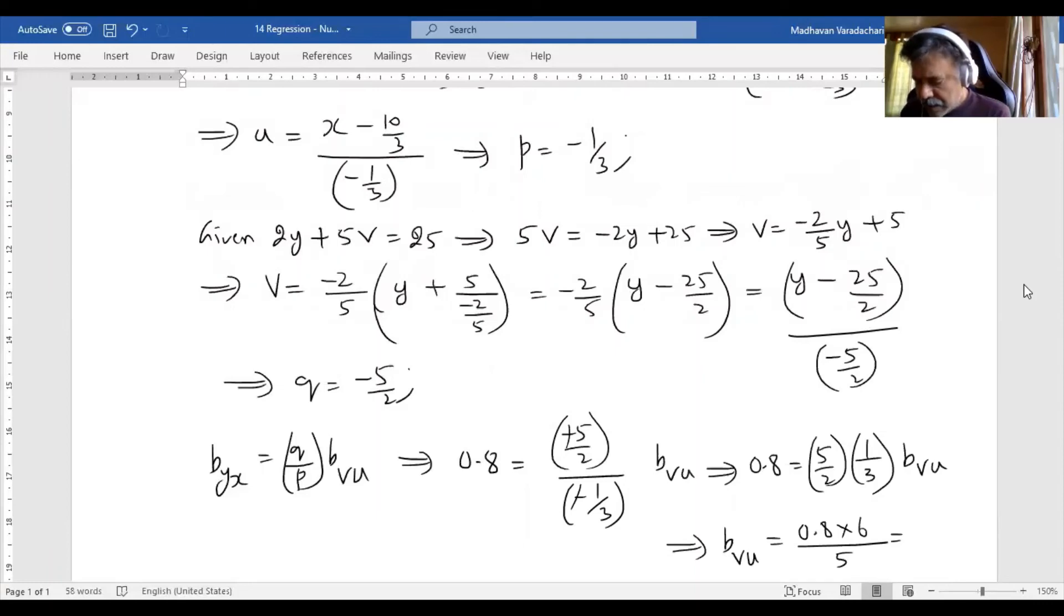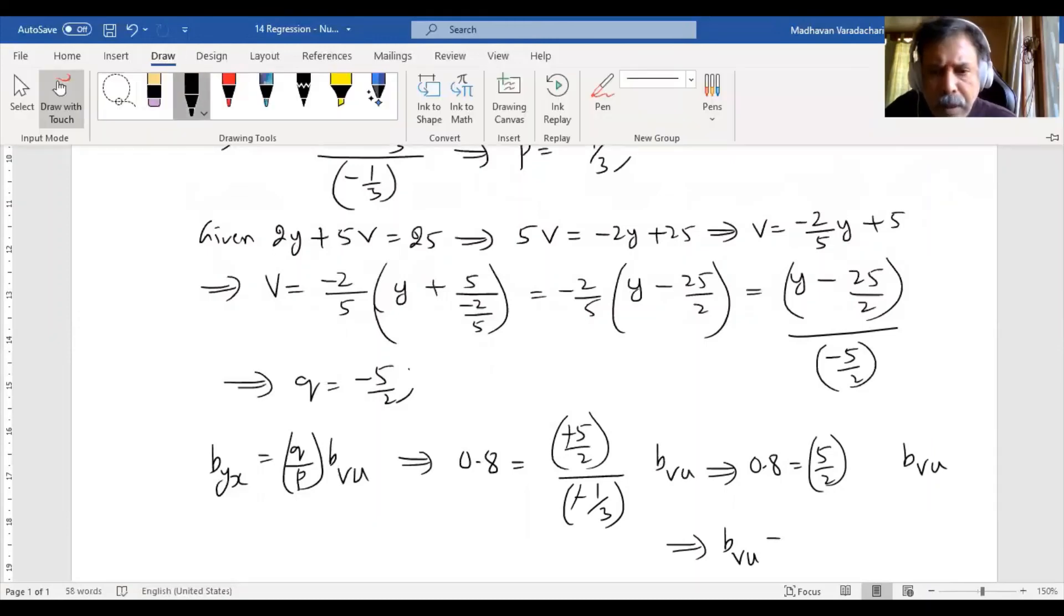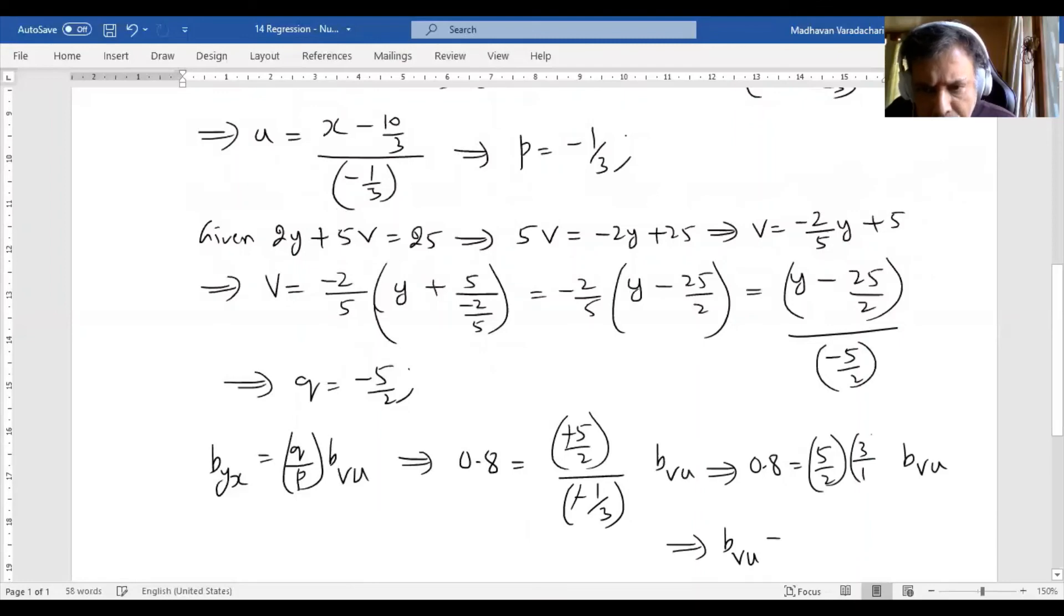No, something wrong. Oh sorry, here I made a mistake. Here it should be reciprocal of the denominator, means 3 by 1. So b_vu will be 0.8 into 2 divided by 15.